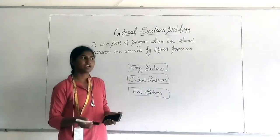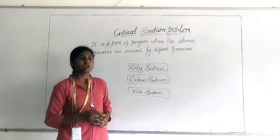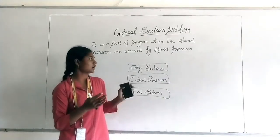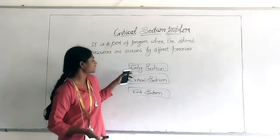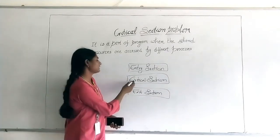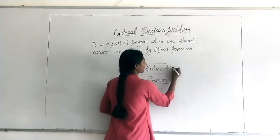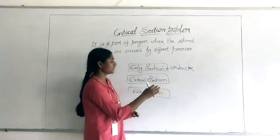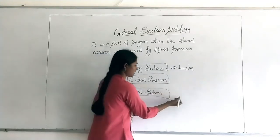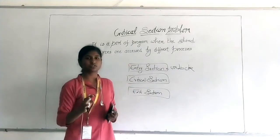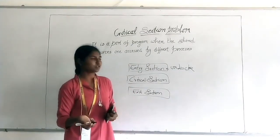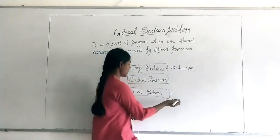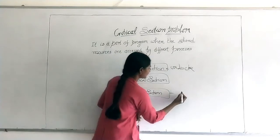For example, if you are entering your room, that room is your critical section — you have some resources you want to use inside. You first have to unlock the door, which is the entry section, then you can enter the room and use the resources. When you go out, that is the exit section — you lock the door again. So entry means unlocking, using the critical section, and then exiting means locking the door.